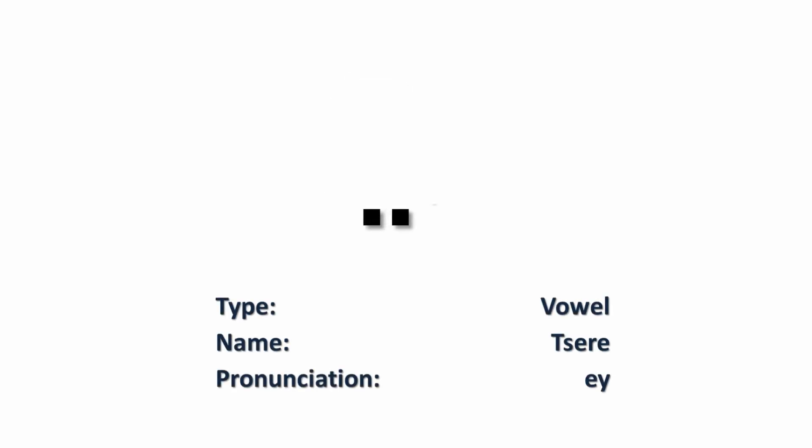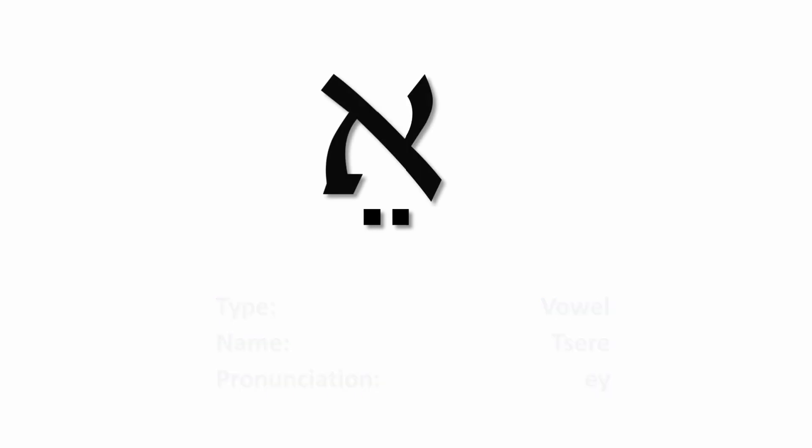This vowel pointing is called the hirek and it has an 'ee' sound — so here we have 'mee' and 'bee.' This vowel is called the tsere and it has an 'ay' sound — here we have 'ay' and 'may.'